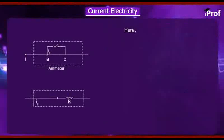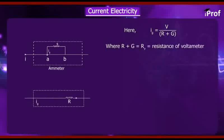Here, I_G = V/(R+G), where R+G = R_V = resistance of voltmeter.